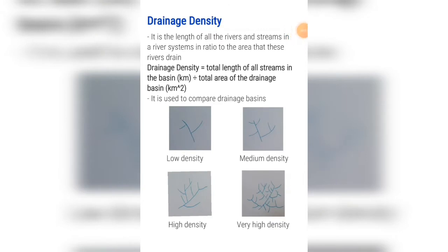It is the length of all rivers and streams in a river system in ratio to the area that these rivers drain. The formula is: drainage density equals the total length of all streams in a drainage basin in kilometers, divided by the total area of the drainage basin in square kilometers.